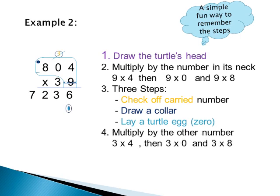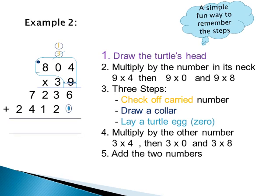Now multiply by the other number, 3. 3 times 4 equals 12 — write 2 down, carry 1 to the next column. Then 3 times 0 equals 0, plus 1 equals 1 — write 1 down. And 3 times 8 equals 24. The last step is to add the two numbers. So 804 multiplied by 39 is 31,356.